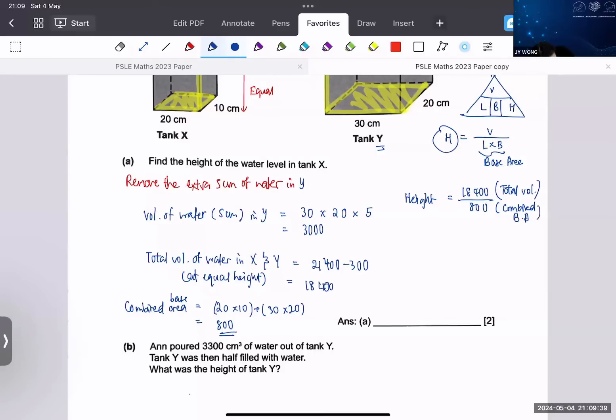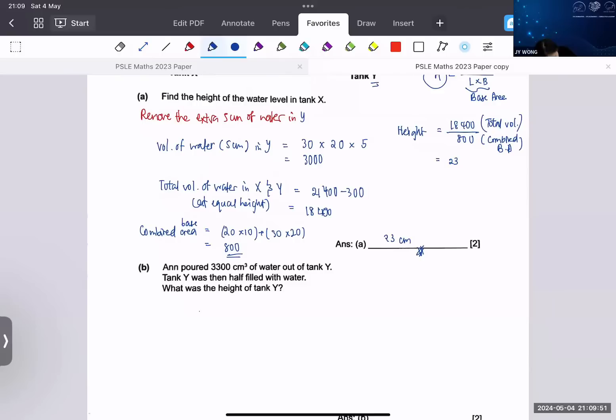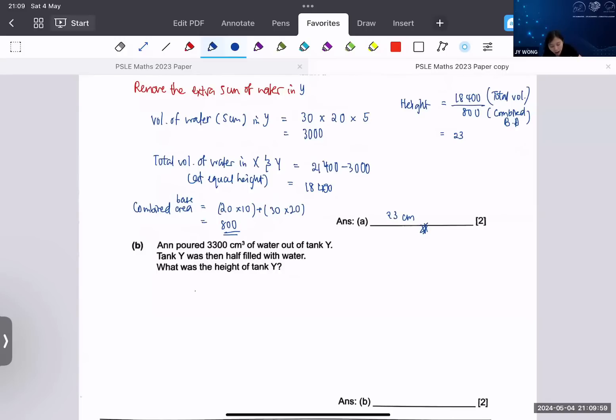And that will give me 23 centimeters. I will say that this question, two marks - it can be also three marks but they made it two marks. So that means the main thing comes from here and answer here, so you get less method marks.